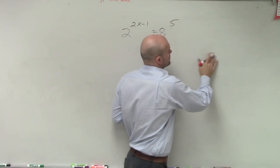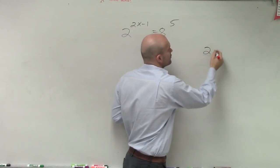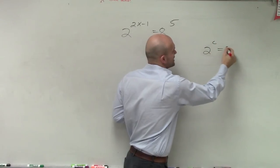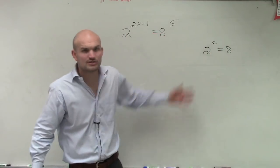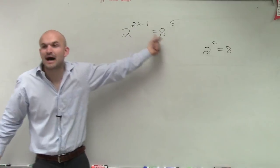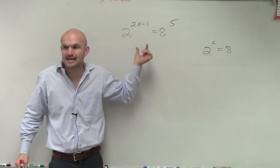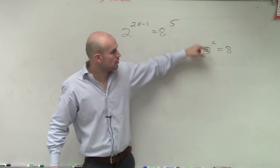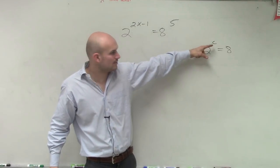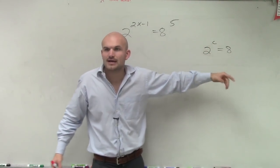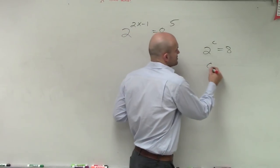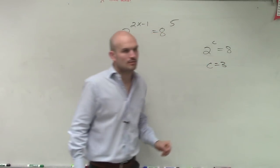I'm sorry. 2 raised to what power equaled 8, right? That's what we tried to do. Because we knew that these bases had to be exactly the same. So we said 2 raised to a number, a random number that we don't know, has to equal 8. And in this example, we said, well, C equaled 3, right?